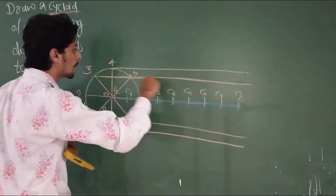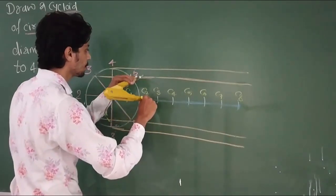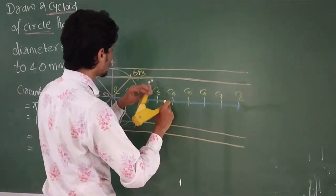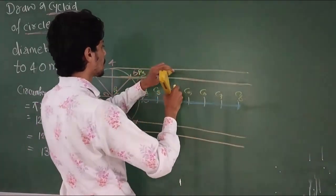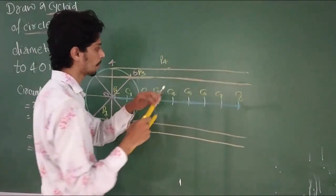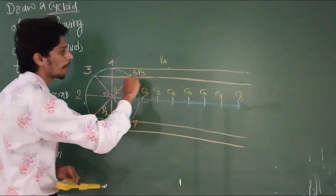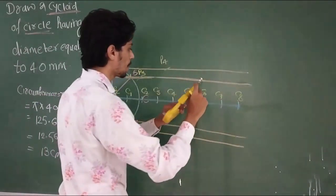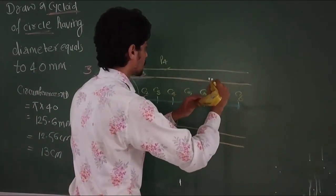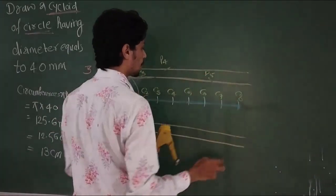From C2, draw arc with radius R to intersect line 2, giving point P2. From C3, draw arc with radius R to get P3. From C4 to line 4, we get P4.